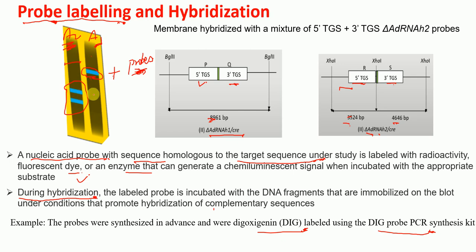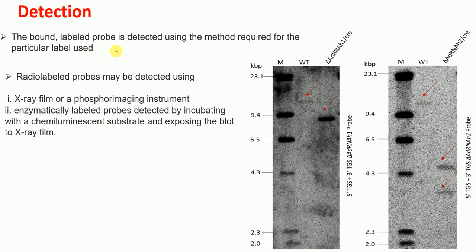After hybridization, we do washing, and unlabeled probes will be washed out. Then in the next step we do the detection using a suitable method based on the kind of probe labeling used. Radio-labeled probes may be detected by X-ray film or phosphorimaging instrument. Enzymatically labeled probes can be detected by incubating with a chemiluminescent substrate and exposing the blot to X-ray film.